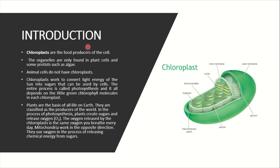Chloroplast is a food producer of any cell. It is an organelle which is used in plant cells or algae. Animal cells do not have a chloroplast — it means that chloroplast is only in plant cells. In animal cells, chloroplast is absent.